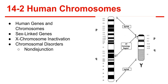Sex chromosome disorders: in females, nondisjunction can lead to Turner syndrome, which results in only one X chromosome instead of two. When this happens, the female is usually sterile. In males, nondisjunction can cause Klinefelter syndrome, which is an extra X chromosome.